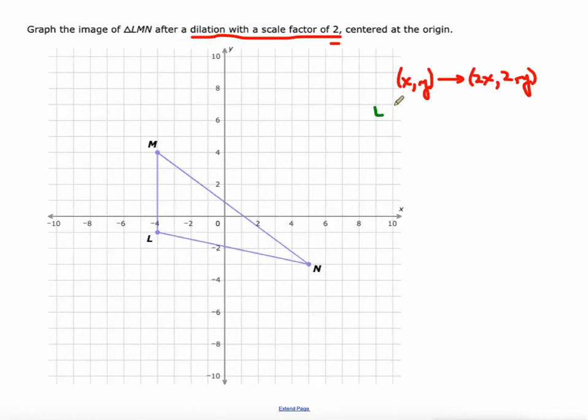So if we look at a point like L, L is currently at negative 4, negative 1. You just multiply both those values by 2, and it'll be at negative 8, negative 2. So this is where L prime would be. Let's keep going. M is currently at negative 4, positive 4. Since we're doing a scale factor of 2, we just multiply each of those by 2, and it's going to be at negative 8, positive 8. So there's M prime.